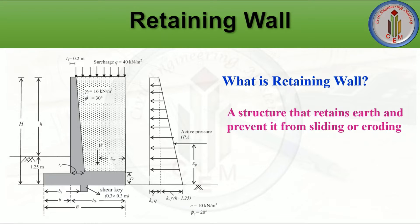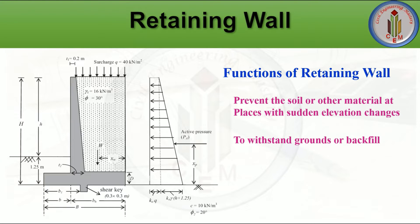Retaining walls are relatively rigid walls used for supporting soil laterally so that it can be retained at different levels on the two sides. These walls are constructed to resist the lateral pressure of the soil when the desired ground elevation exceeds the angle of repose of the soil.